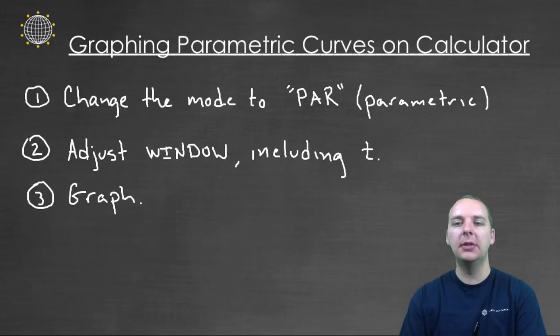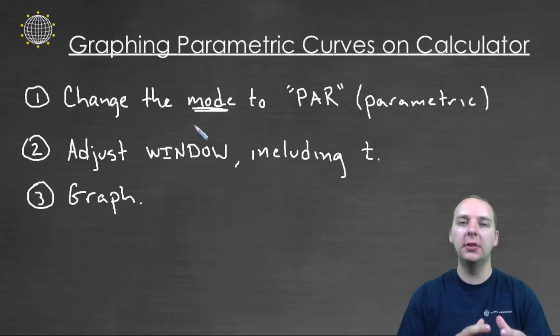So in this video, I just want to give you some steps on how you would go through and graph a parametric equation using your calculator. So the first thing you have to do, the big thing, is you have to change the mode of your calculator from the mode it's currently in, which is called function mode, where you have Y's and X's, into a mode called parametric mode.